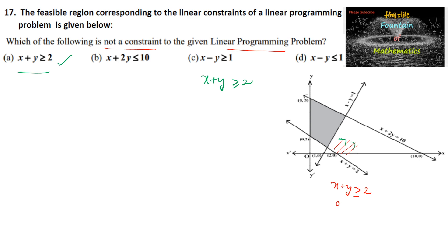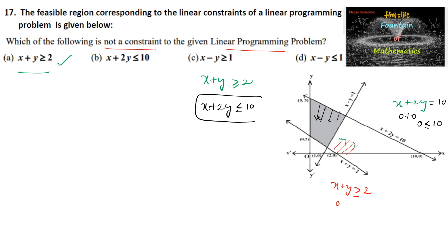Coming to the second one: x + 2y = 10. Substituting the origin: 0 + 0 = 0. Since 0 is less than 10, the solution is towards the origin, and the origin must satisfy it. So x + 2y ≤ 10 is the linear constraint, which is the second option — also a constraint.